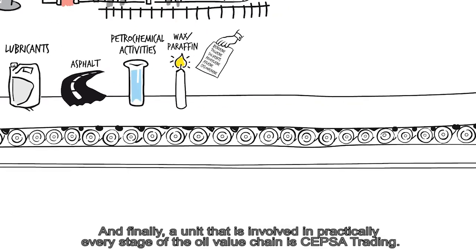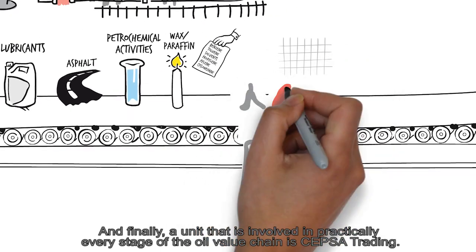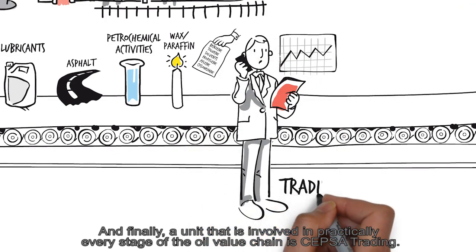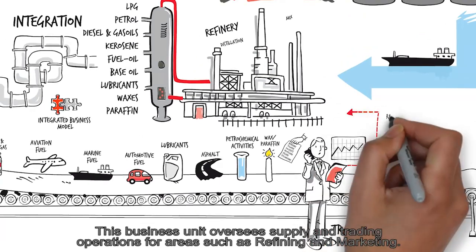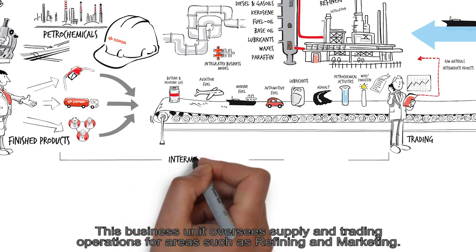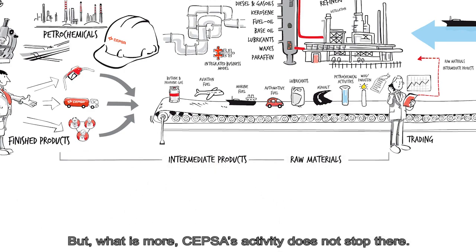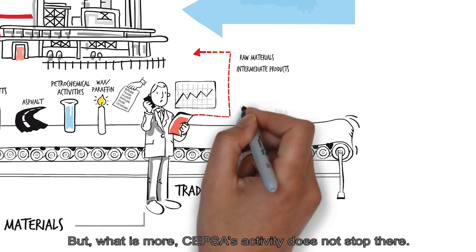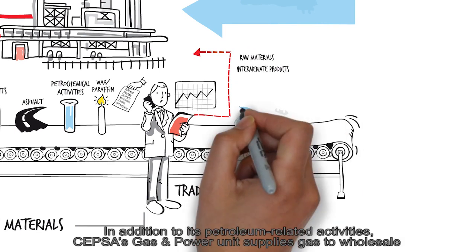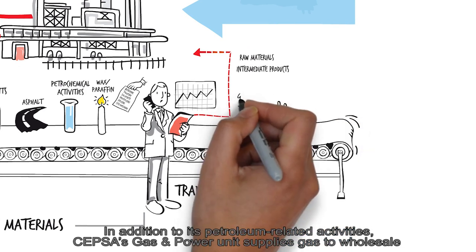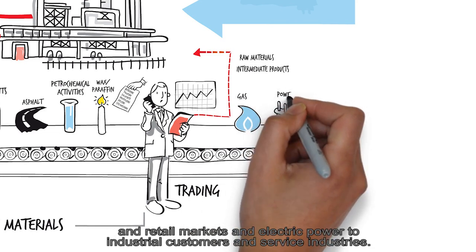And finally, a unit that is involved in practically every stage of the oil value chain is CEPSA Trading. This business unit oversees supply and trading operations for areas such as refining and marketing. But what is more, CEPSA's activity does not stop there. In addition to its petroleum-related activities, CEPSA's Gas and Power unit supplies gas to wholesale and retail markets and electric power to industrial customers and service industries.